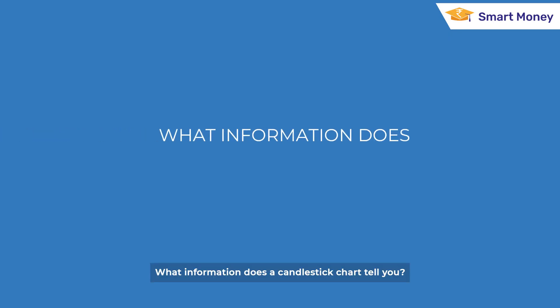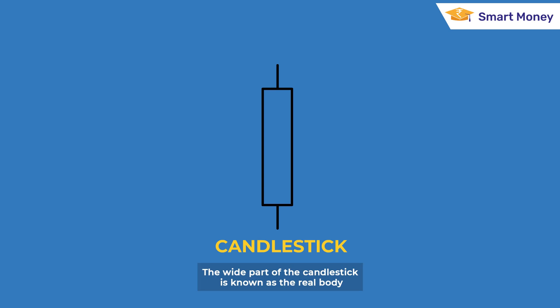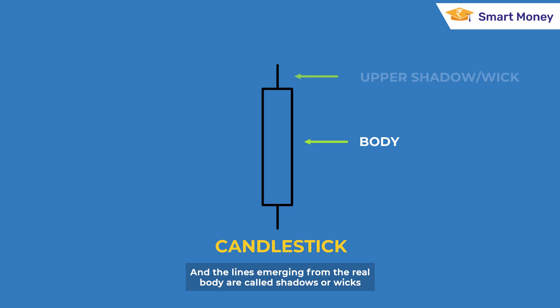What information does a candlestick chart tell you? To understand this, let's first look at a candlestick. The white part of the candlestick is known as the real body, and the lines emerging from the real body are called shadows or wicks.